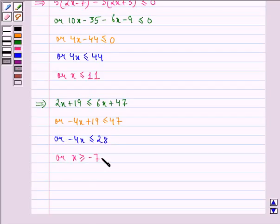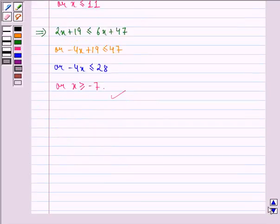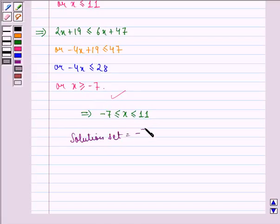Hence, the values of x satisfying both the inequalities are given by -7 ≤ x ≤ 11 or we can say that solution set is [-7, 11] in the closed interval. That means -7 and 11 are included. This is our answer to this question.